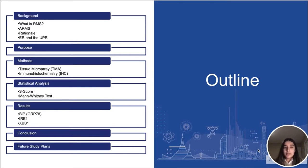Before I begin, I would like to mention that throughout this presentation, I will be referring to rhabdomyosarcoma as RMS, alveolar rhabdomyosarcoma as ARMS, and the unfolded protein response as the UPR.